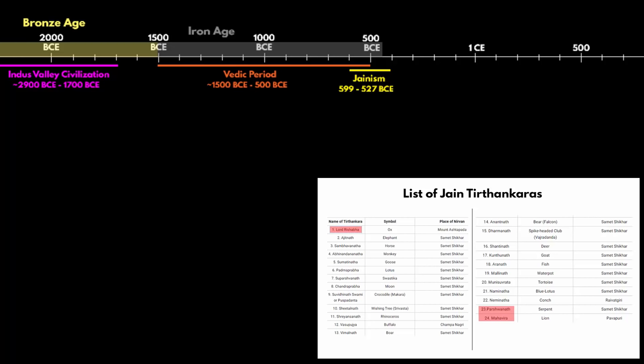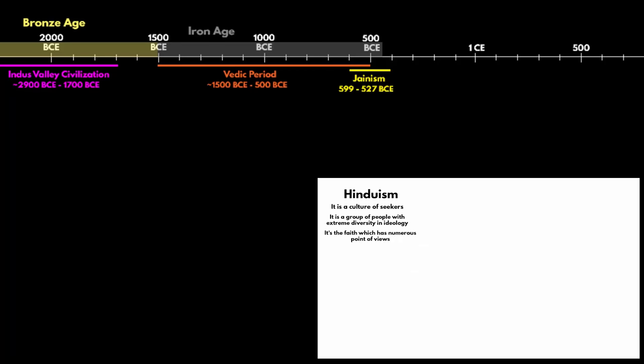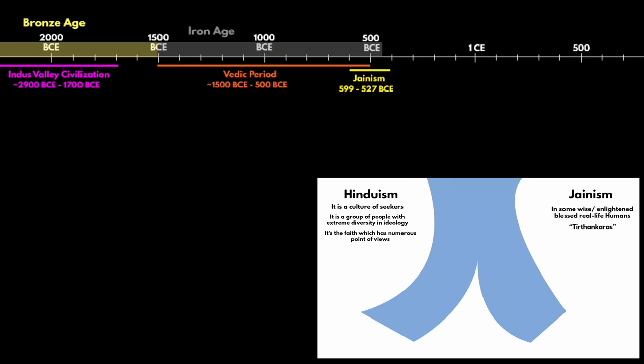Jains, Buddhists and Hindus all refer to their religion as Dharma or Sanatana Dharma, meaning the eternal path. Back then, there were no such terms as Hinduism or Jainism. The concept of people belonging to a specific religion by birth is actually new. Hinduism is not a religion — it is a culture of seekers, a group of people with extreme diversity and ideology. Jainism, on the other hand, is different: Jain people believe in wise, enlightened, blessed real-life humans called Tirthankaras. Jains largely don't follow Vedic rituals and do not worship Vedic Gods and Goddesses. Hence, by logic, if Jain people don't follow Vedic rituals, then Jainism must be a post-Vedic religious practice of Sanatana.